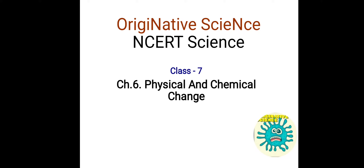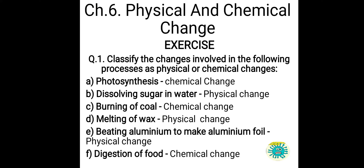Good morning everyone, welcome to Originative Science. Today we are going to discuss in CRT class 7th chapter number 6, that is Physical and Chemical Change. The first question we are going to discuss from the exercise is: classify the changes in the following processes as physical or chemical change.